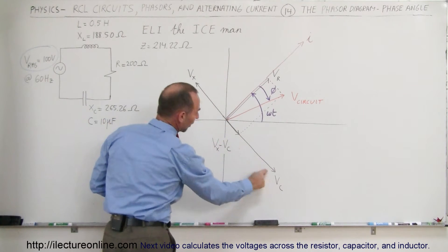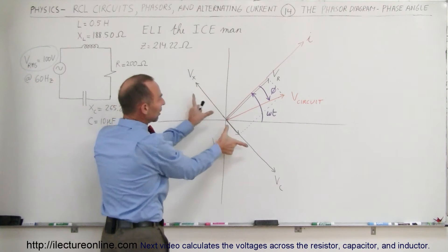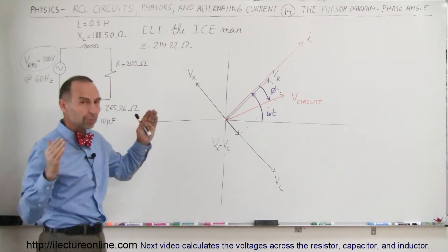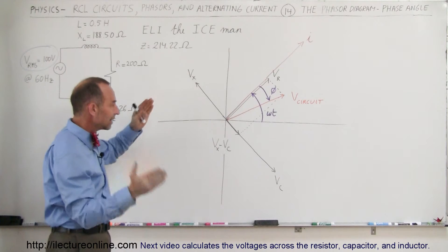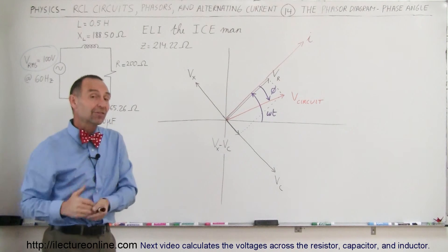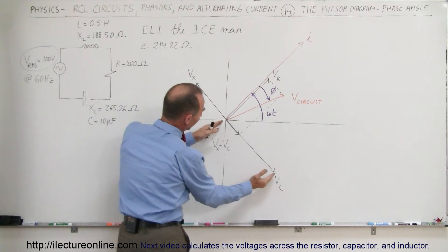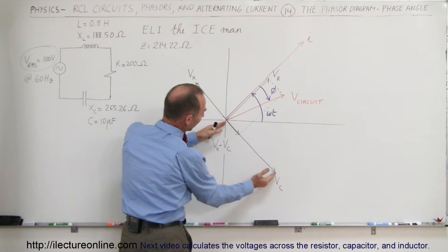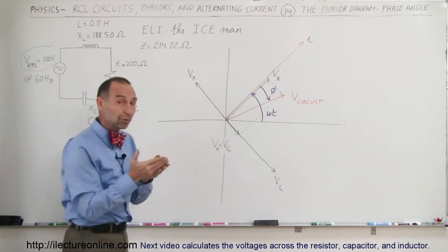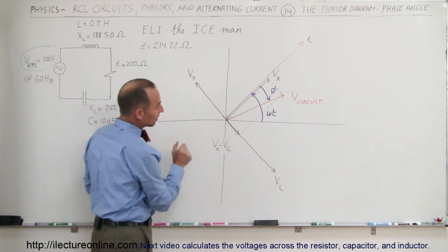This is the voltage across the capacitor, and the voltage across the inductor. Notice that they're always 180 degrees out of phase. So when you add up the voltages of the inductor and the capacitor together, they will cancel each other out like two vectors in opposite directions. But in this case, since the voltage across the capacitor is a greater value than the voltage across the inductor, when you add the two together vectorially, you can see there's some net result right here.